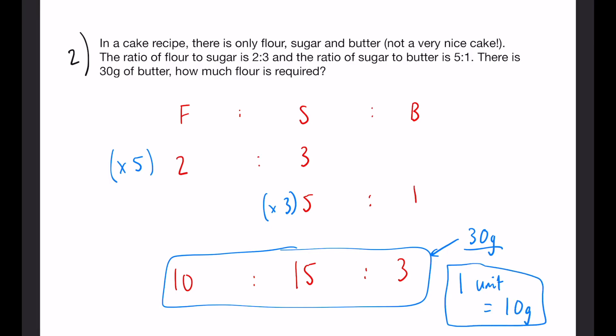If 1 unit equals 10 grams, we are asked how much flour is required, which is 10. So 10 multiplied by 10, you are going to need 100 grams of flour. And that is your final answer.